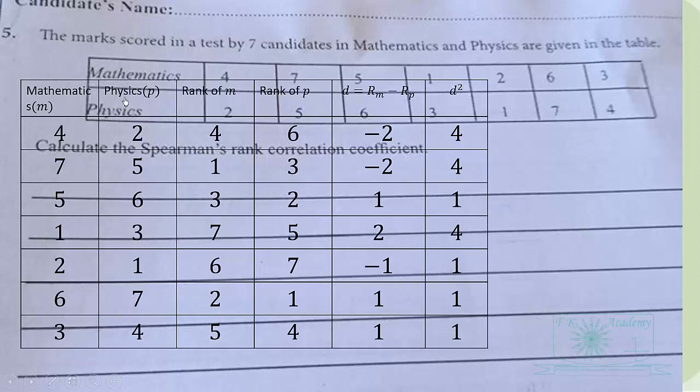So we rank the physics also, the rank of physics starting from the highest as one. So the highest mark here is seven so that is one, then the next one is six that is two, second, so third is fifth till we reach the last one which is seven. Now we can find the difference between the ranks.